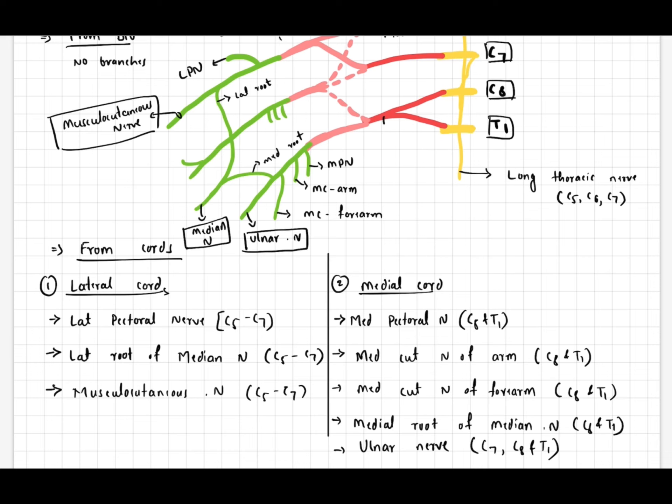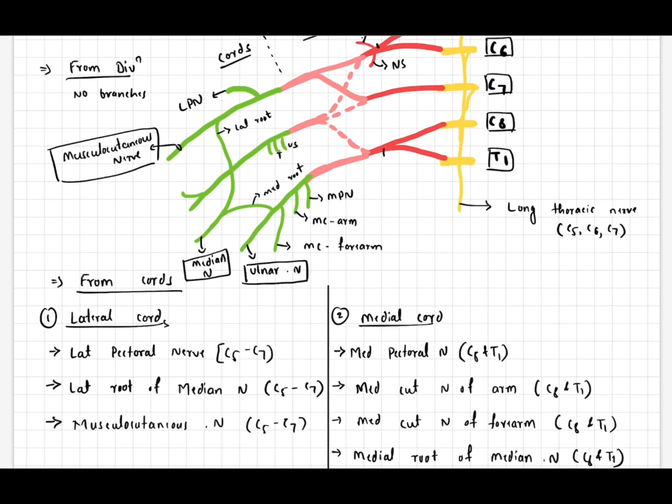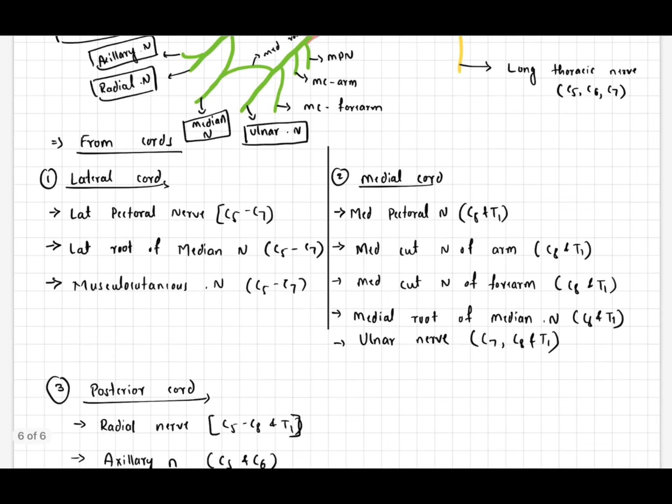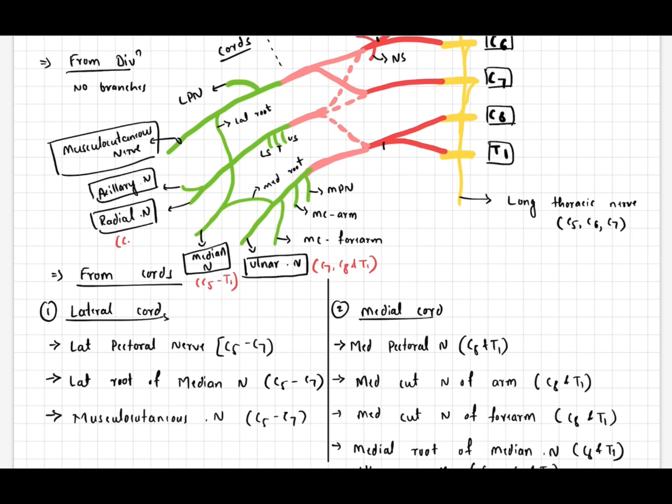From the posterior cord: radial nerve, axillary nerve C5 and C6, thoracodorsal nerve to latissimus dorsi with root value C6, C7, and C8, upper subscapular nerve C5 and C6, and lower subscapular nerve C5 and C6.